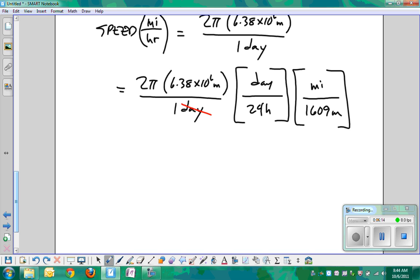We need to know how many meters are in a mile: 1,609 meters per mile. Now our units are going to cancel out. Day cancels day, meters cancels meters, so we'll have miles per hour. 2π × 6.38 × 10^6 divided by 24 × 1,609, and the units are miles per hour.